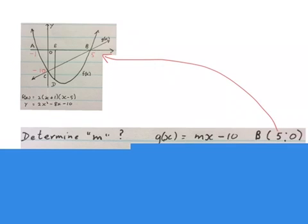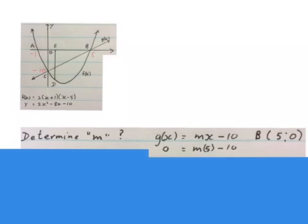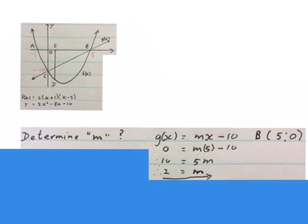Because the b(5,0) lies on both the parabola and the straight line I can just substitute this back in here. The naught in the place of y and the 5 in the place of x. Then if you simplify this you'll find out m equals to 2.